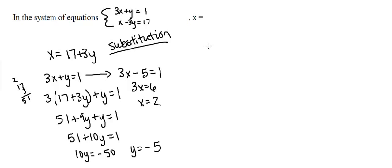Okay, so the second way we can do this is called elimination. In this case, we want to eliminate one of the variables right from the beginning. So let me show you what I mean by that. We have 3x plus y equals 1 and then we have x minus 3y equals 17.